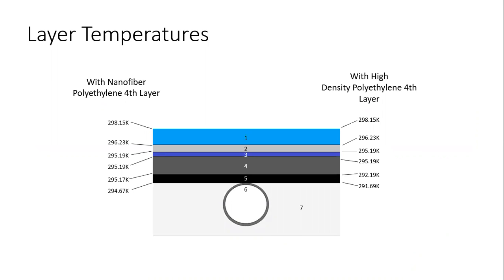Utilizing the thermal resistances tabulated in the previous slide, we have a diagram of our theoretical setup for this PVT system. The temperature differences on the left and right correspond to changing out the fourth layer. The left side has the nanofiber polyethylene and the right side has the high-density polyethylene. While the temperature differences may seem modest, over the lifespan of a PVT system — up to 30 years — running annually, this would make a large difference in overall efficiency and energy produced. Every degree saved means the PV cell is more efficient and the heat exchanger can carry more heat to do work further down the line.